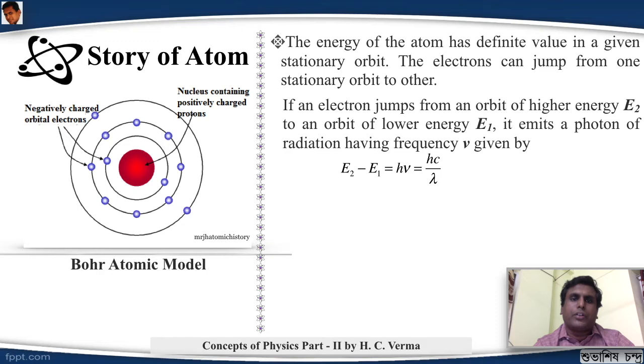If an electron jumps from an orbit of higher energy E2 to an orbit of lower energy E1, it will emit a photon of radiation having frequency nu, which is given by this equation - the famous equation you must have seen.